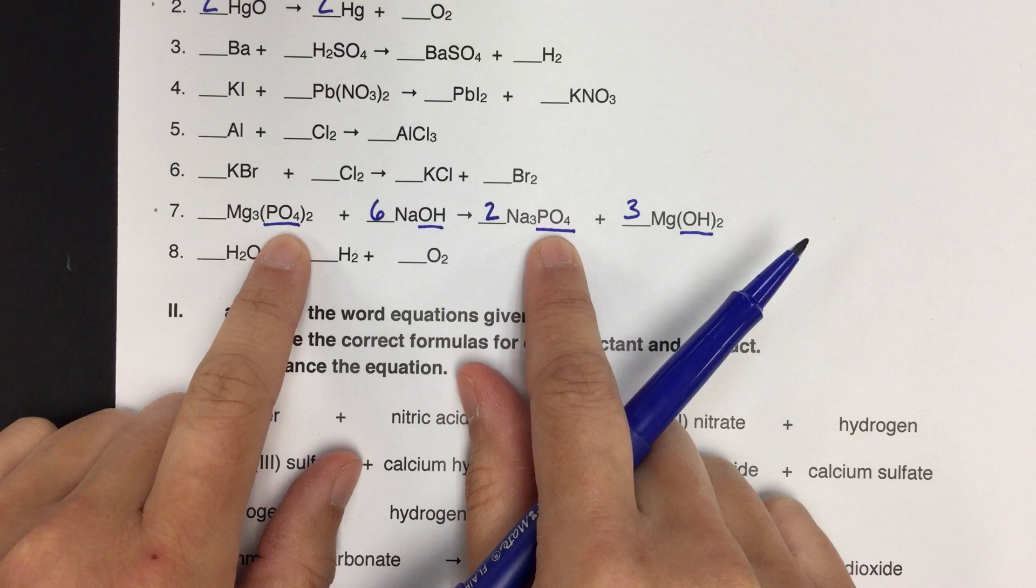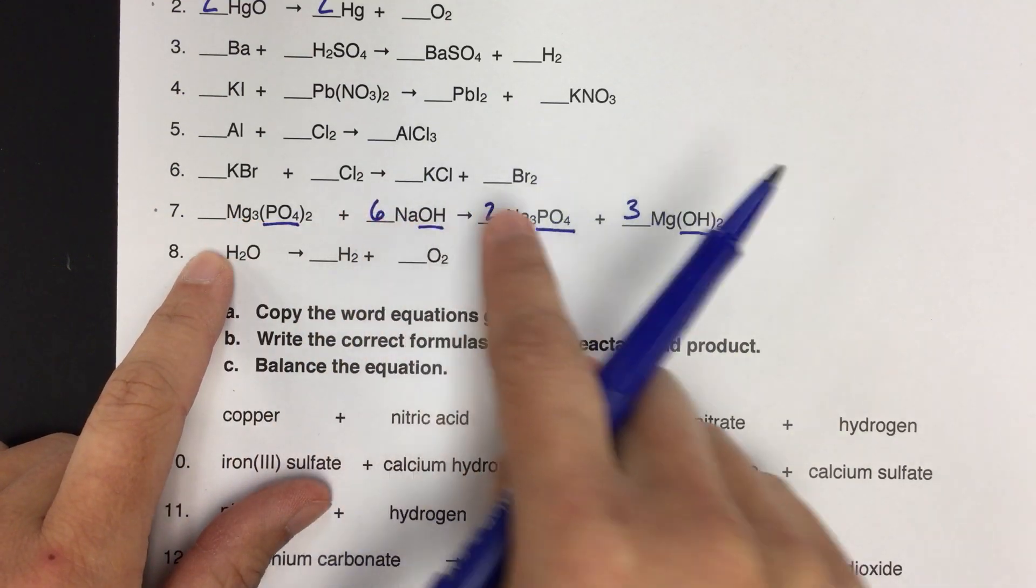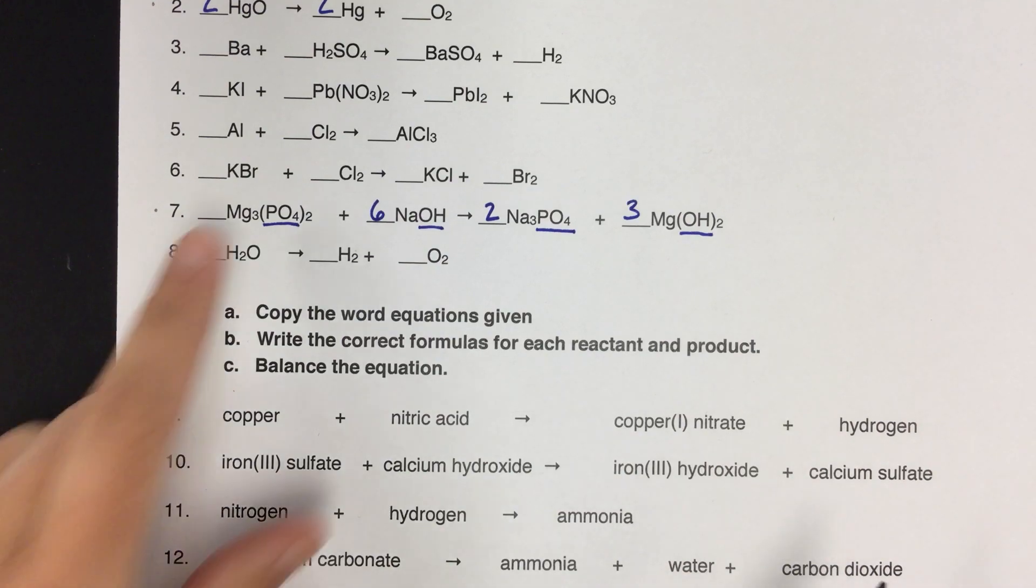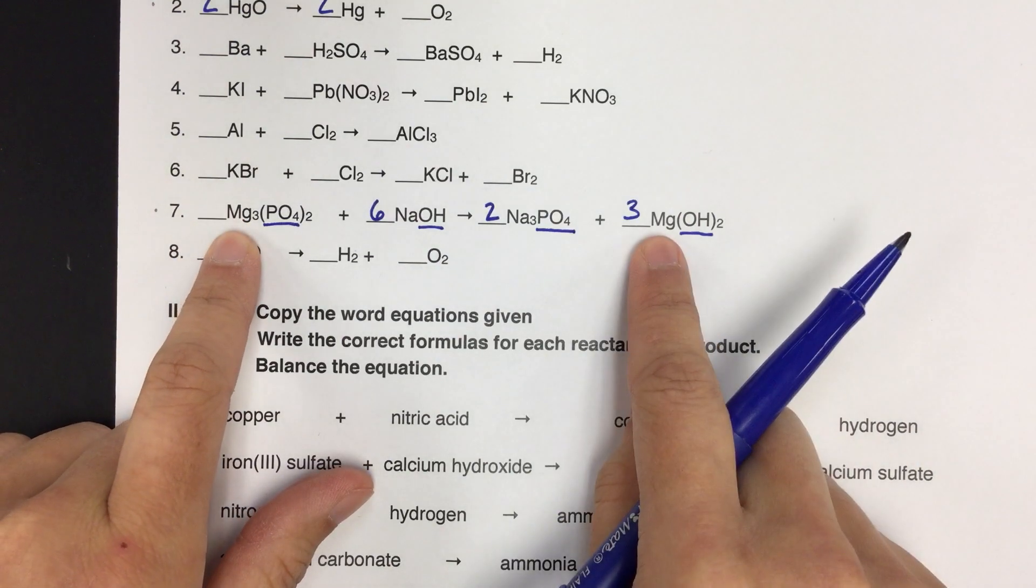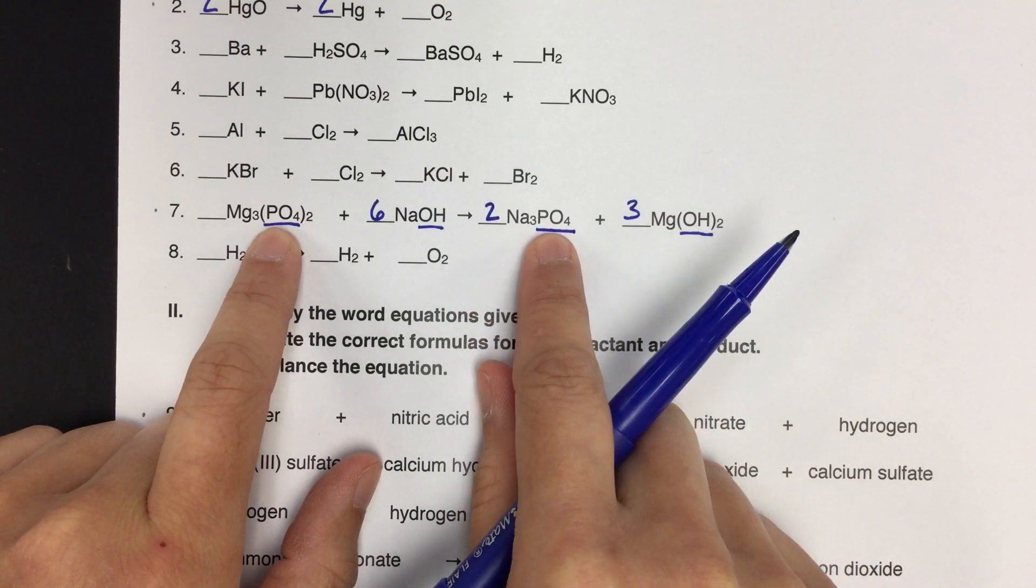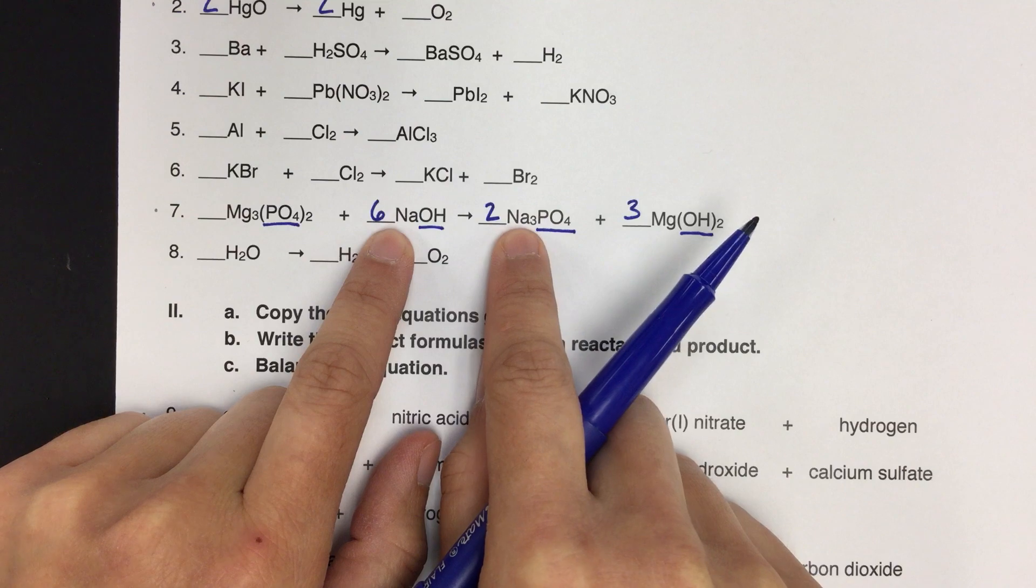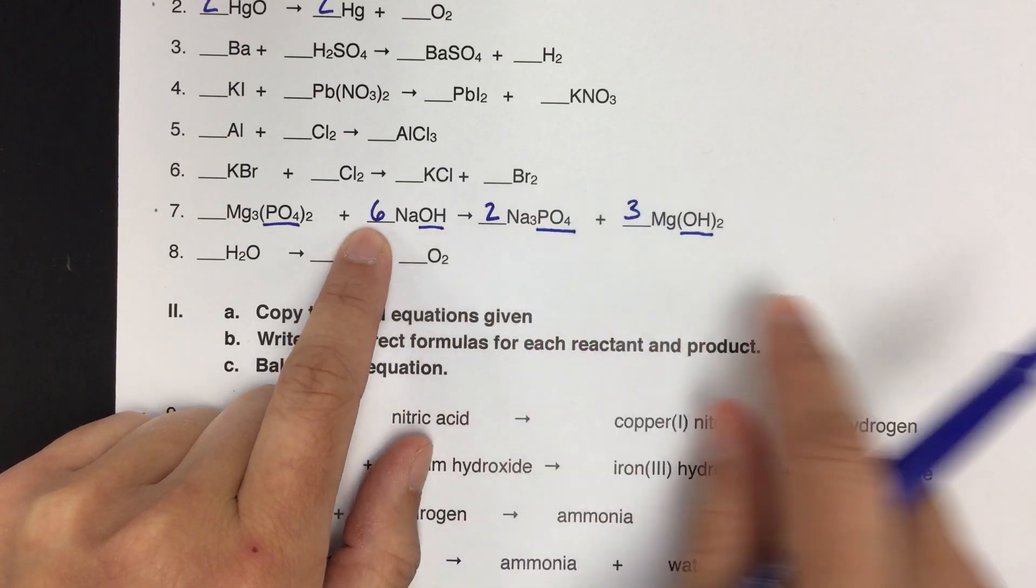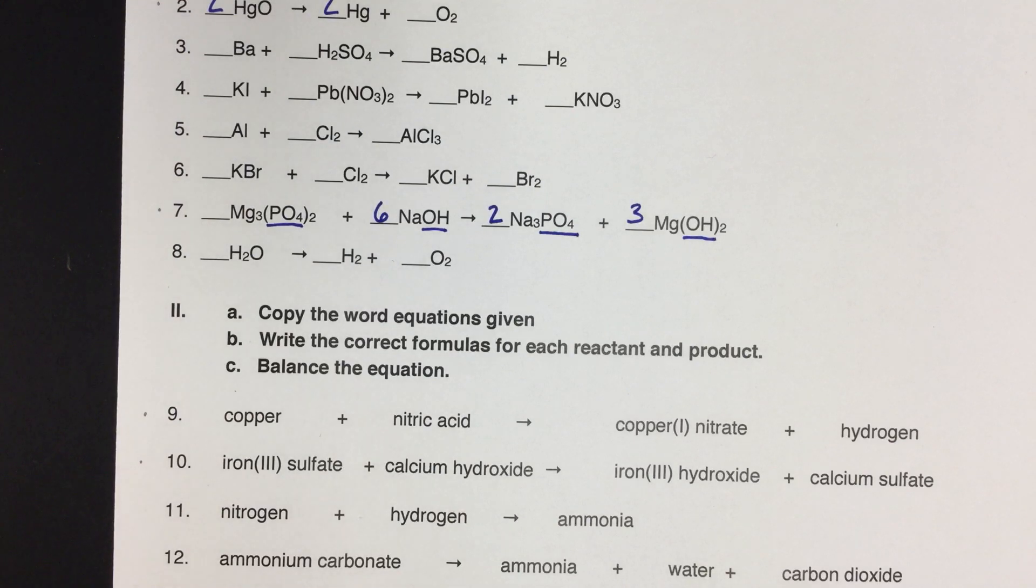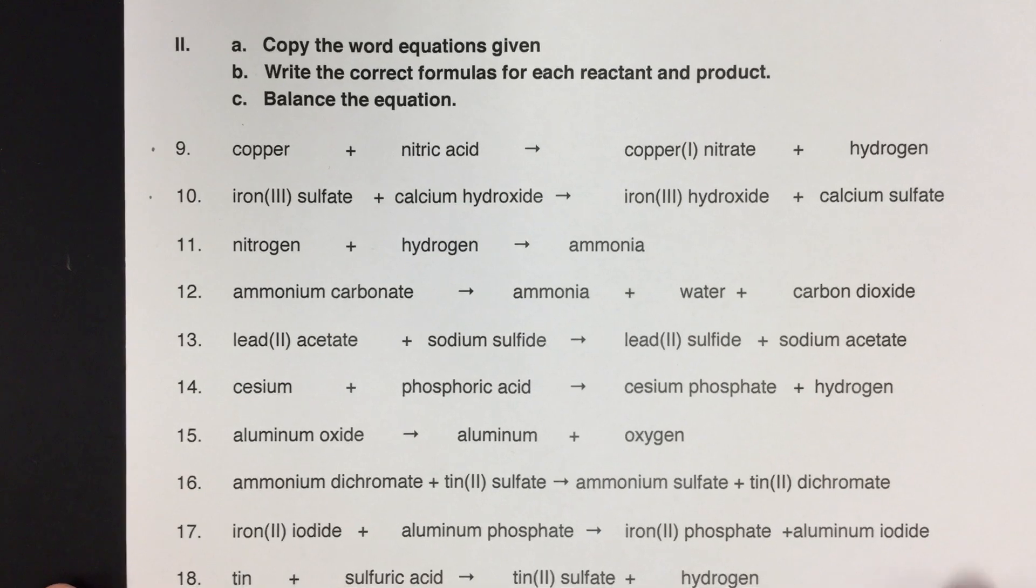We're in luck because there are already two phosphates here. So those are balanced. And once you've added your coefficients, it's always good to go back and double check that everything does balance out quickly. So three magnesiums, three magnesiums, two phosphates, two phosphates, six sodiums, six sodiums, six hydroxides, and six hydroxides. So it's a little bit bigger one, but again, take it one at a time. And it's a big back and forth game. I think I'll switch to another video for part two of this assignment.